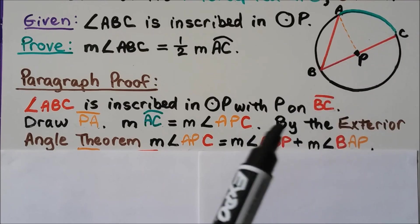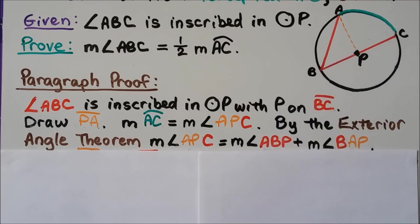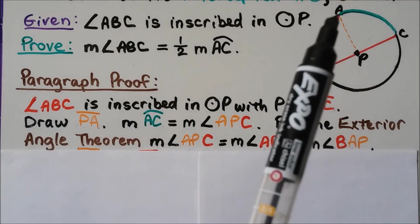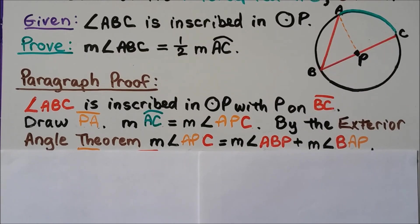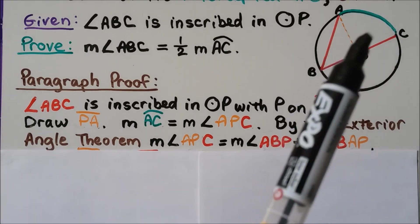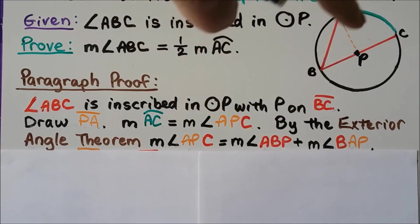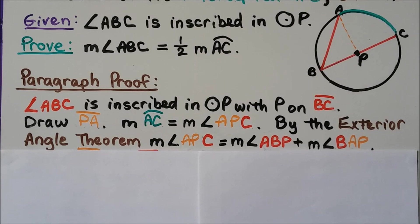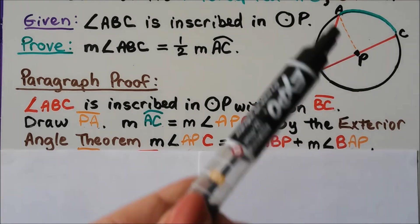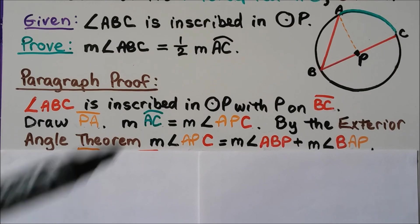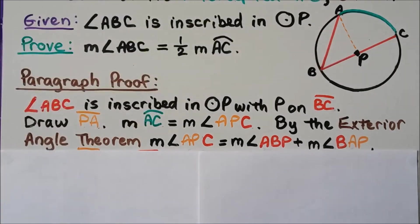Angle ABC is inscribed in circle P with P on segment BC — that's actually a diameter, which means PB and PC are radii. We draw segment PA, which is also a radius. The measure of arc AC equals the measure of central angle APC. By the exterior angle theorem, the measure of angle APC equals the measure of angle ABP plus the measure of angle BAP.